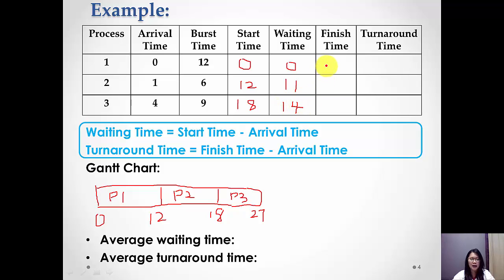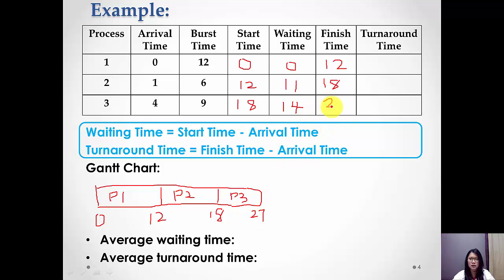For the finish time, we look at the Gantt chart. Process one finishes at 12 seconds, so we put 12. Process two finishes at 18 seconds. Process three finishes at 27 seconds.